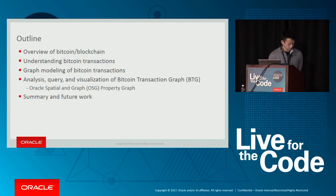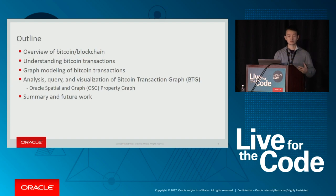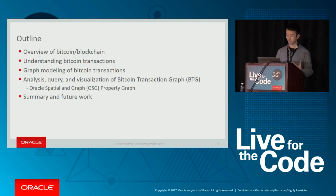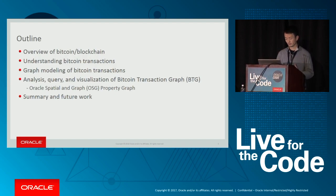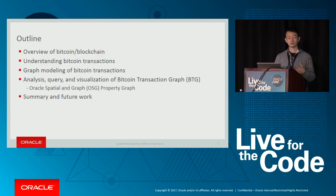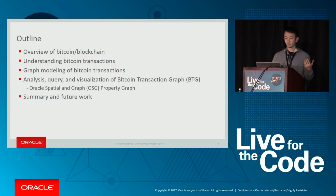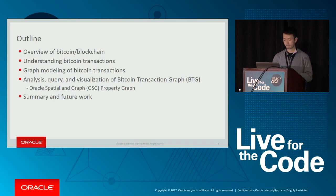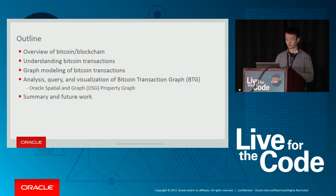A quick outline: I will give you an overview of blockchain technology and what Bitcoins are. I will drill a little bit into the details of Bitcoin transactions. One of the focus areas of this talk is a graph — how a graph can be applied to model blockchain Bitcoin transactions and analyze them. I will quickly give you an overview of Oracle Spatial and Graph property graph, which is a feature in Oracle Spatial and Graph.